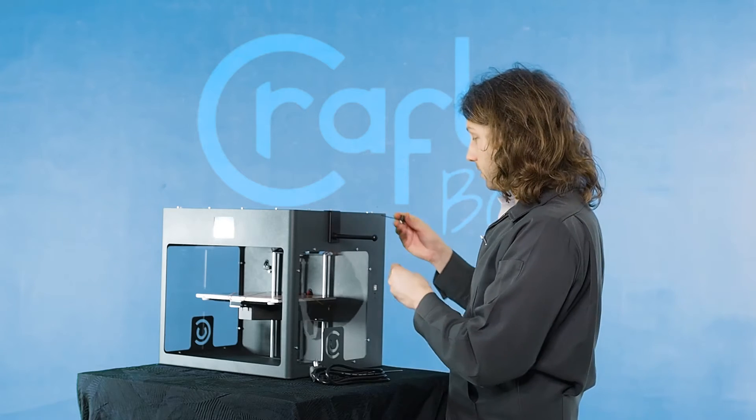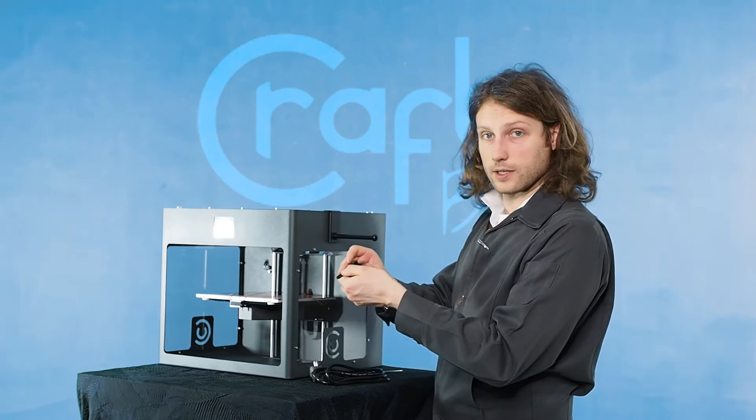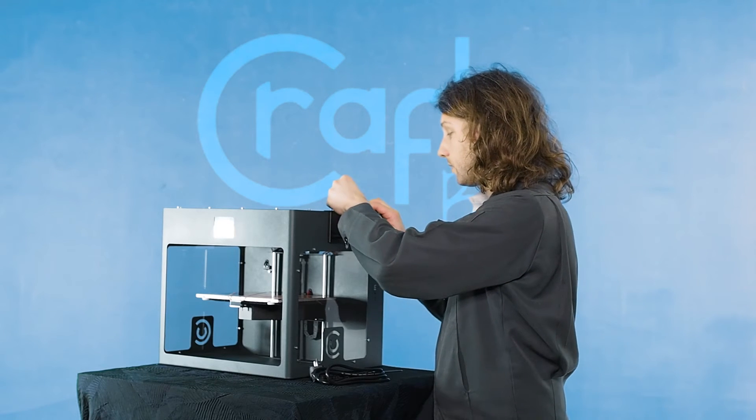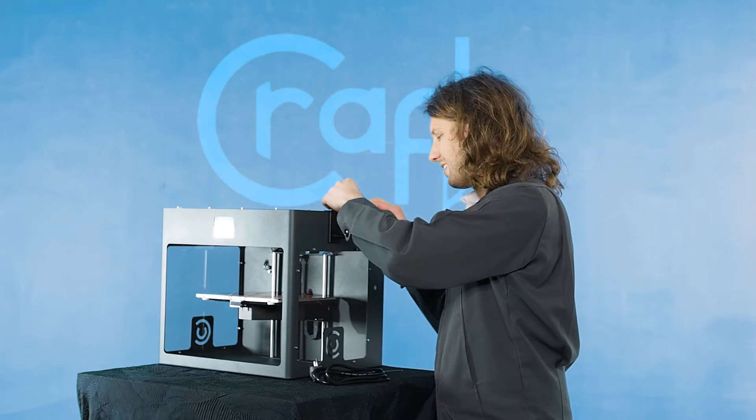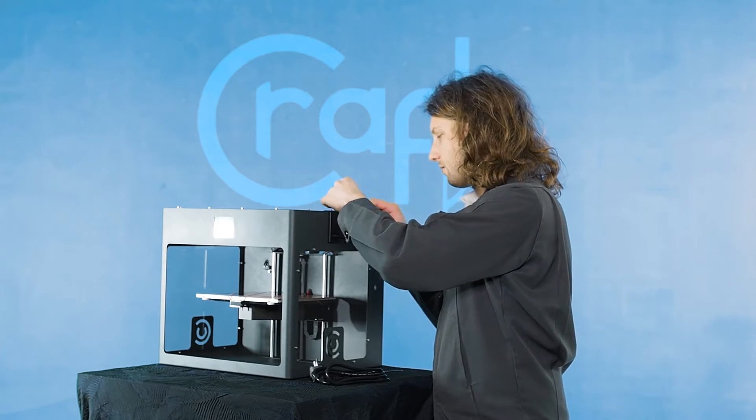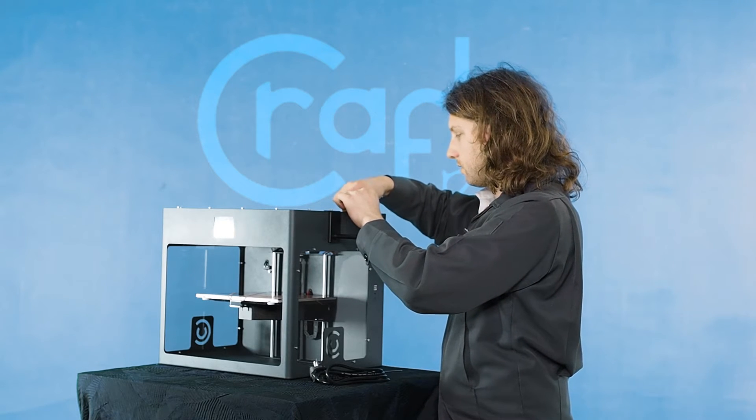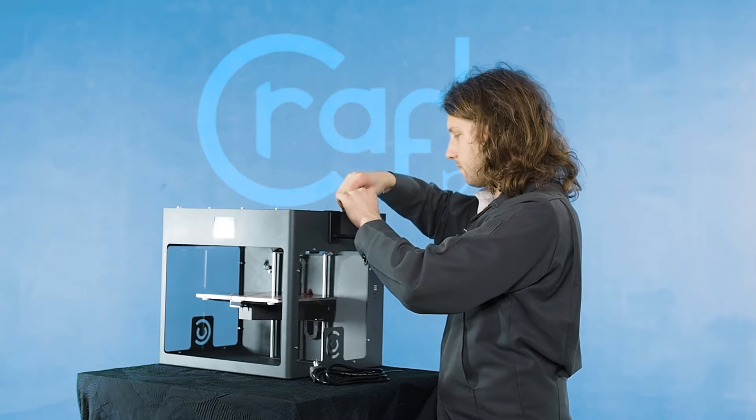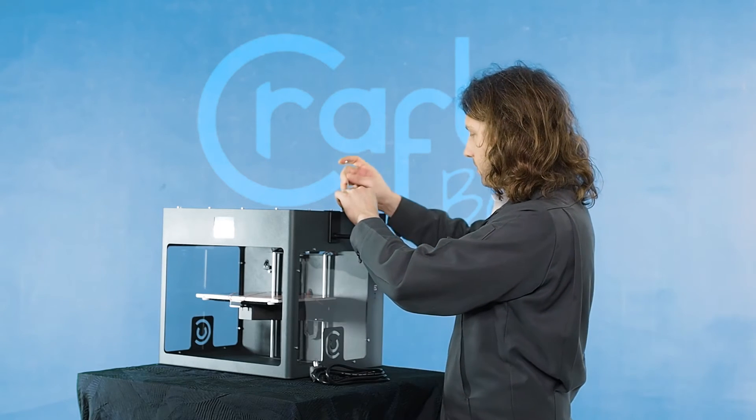Filament guide tube holder - you want to put the black end, the bigger end, up. Put that on, get it started there, and finish it off with the Allen wrench.